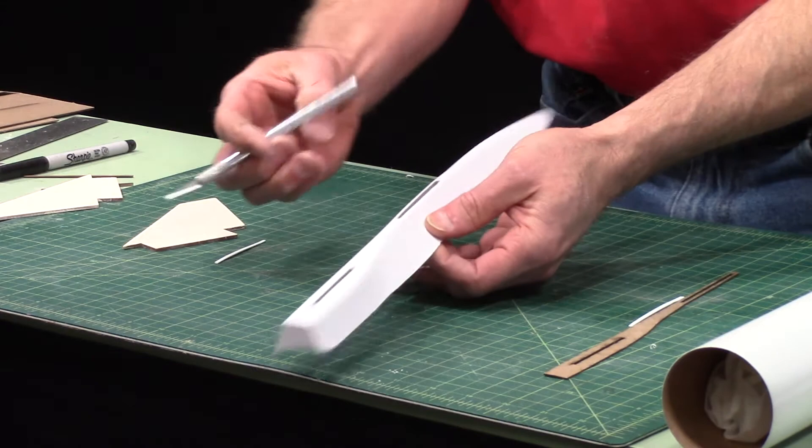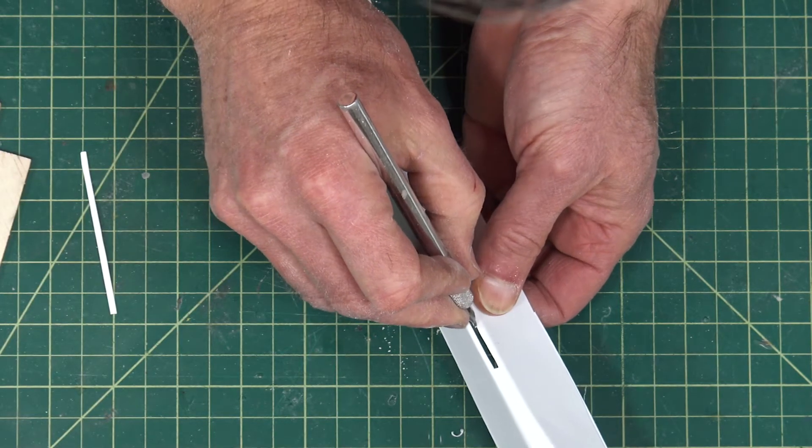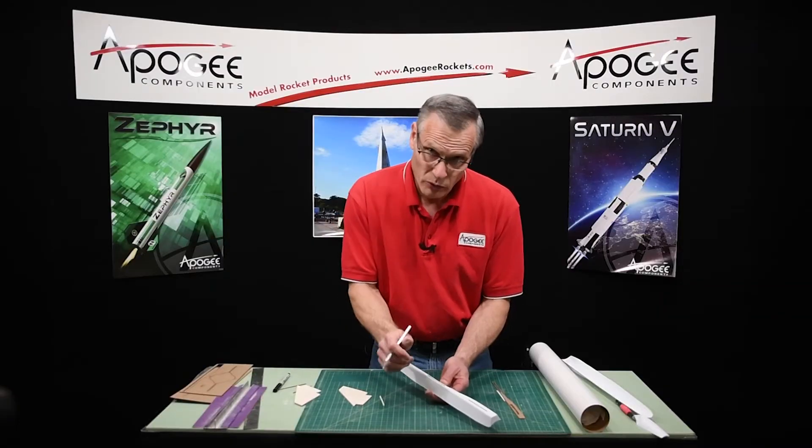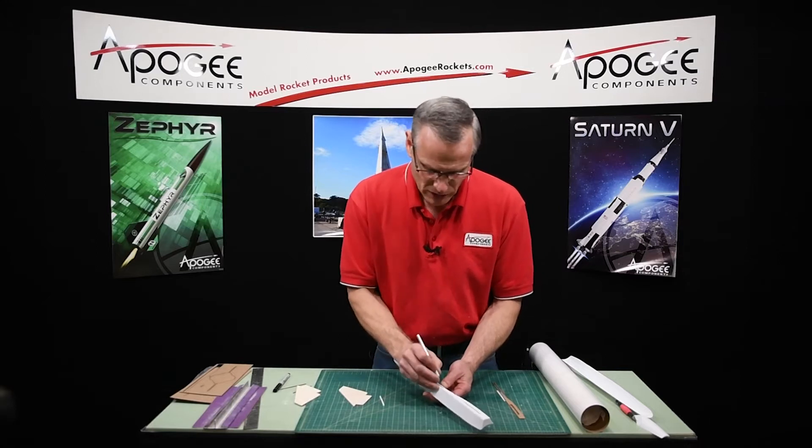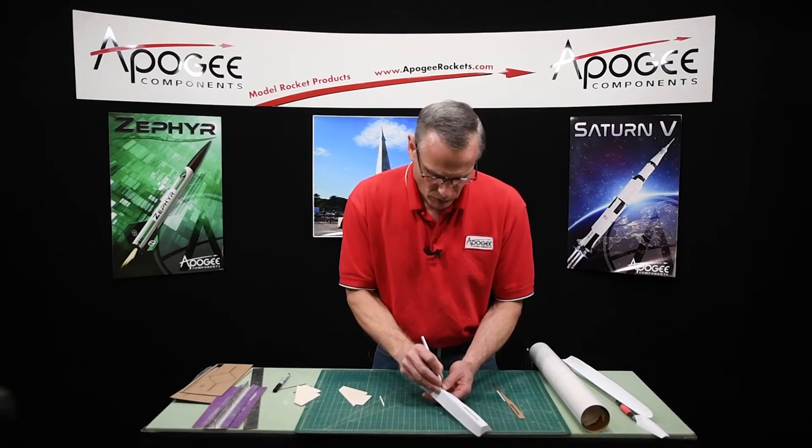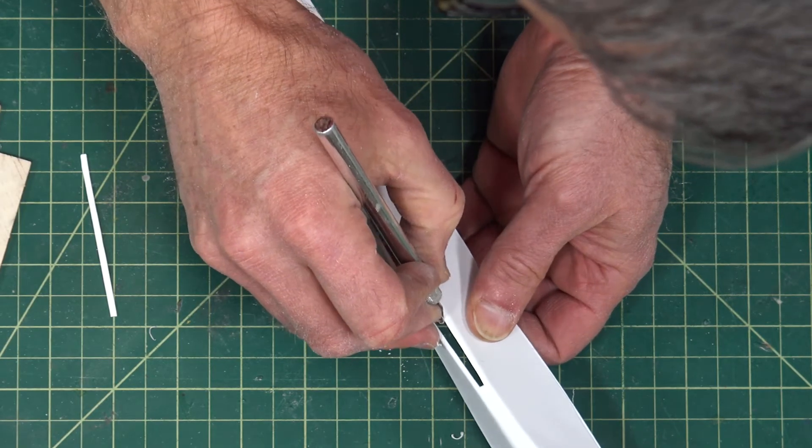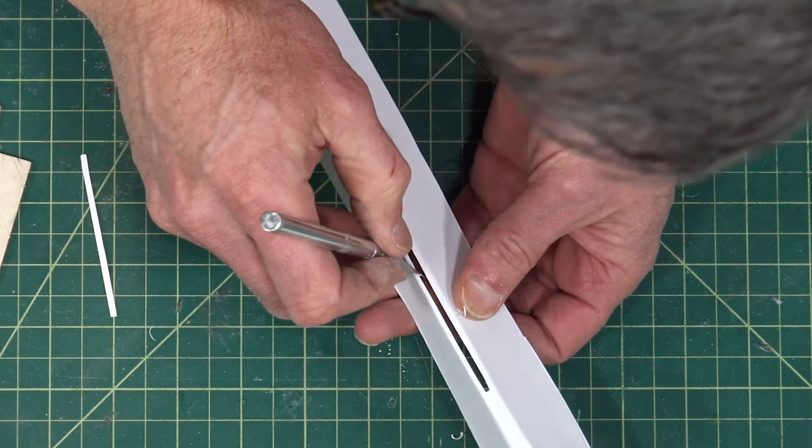This one's a little bit tight on the back edge. Now if it's too loose, don't worry. We're going to come and fill it with a fillet a little bit later. That will cover up any gaps. So just as long as it's not too tight to go in, it can be solved. It can be salvaged.